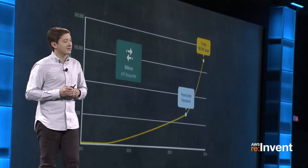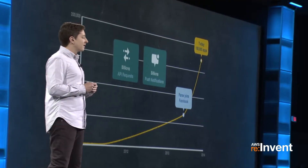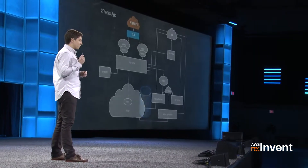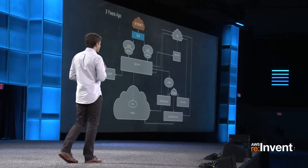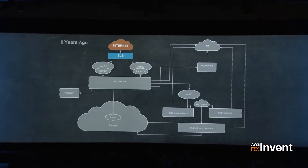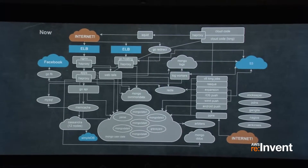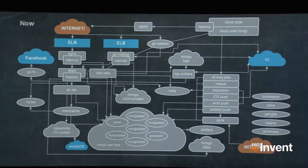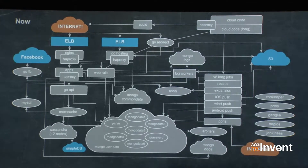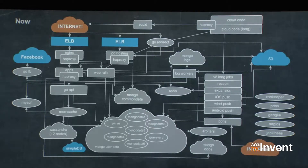These days we power 180,000 different applications. We're doing billions of push notifications and billions of API requests every month. This is what our infrastructure looked like two years ago — pretty simple. The flexibility of AWS has allowed us to get pretty creative over two years, and now we've got a lot more complexity: all sorts of databases. The sheer breadth and scale of applications has really changed over time.